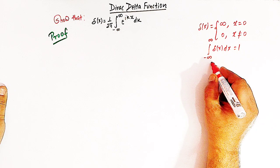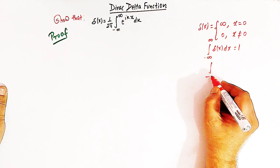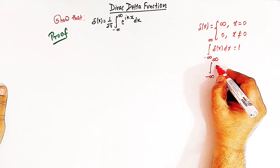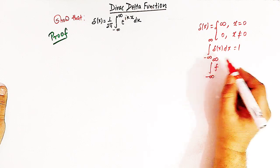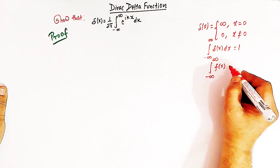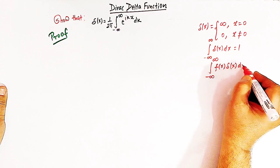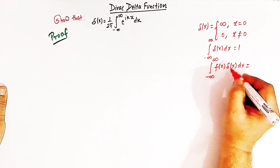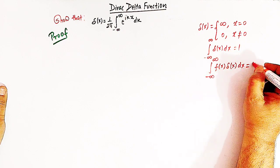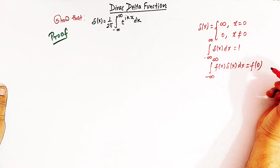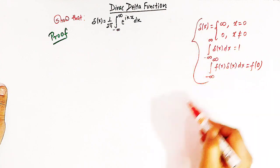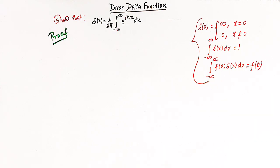Sometimes we also write the integral from minus infinity to infinity — if we have a function f of x associated with the delta function, then the value of this integral is given by f of 0. So we have these three representations, or definitions, for the direct delta function.